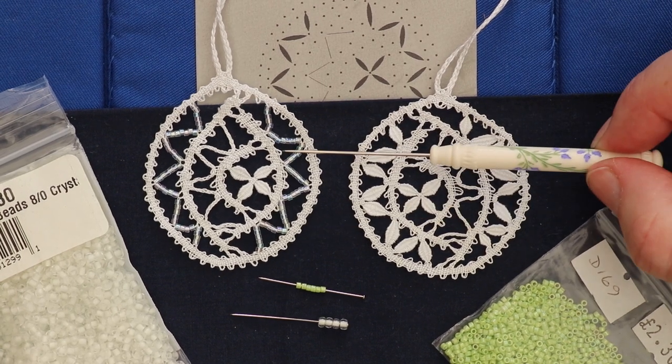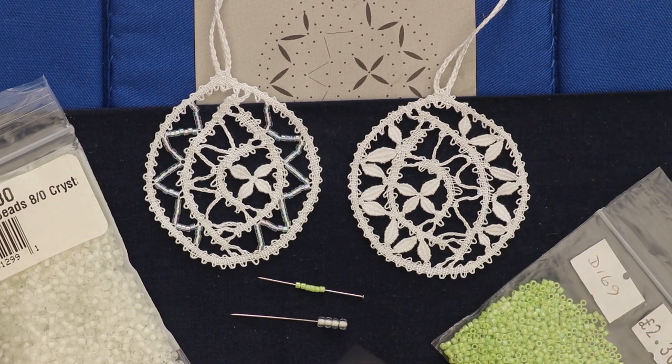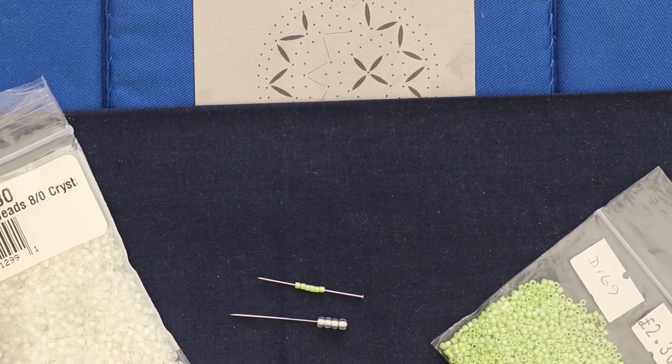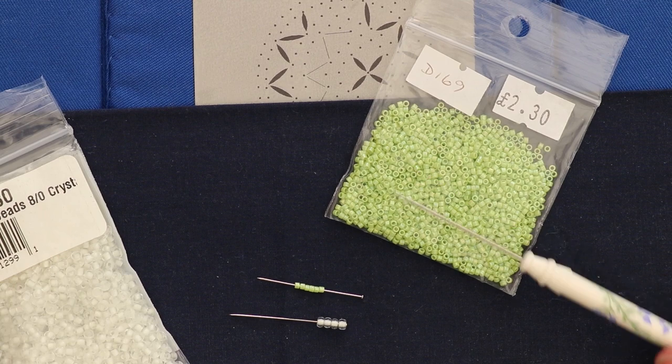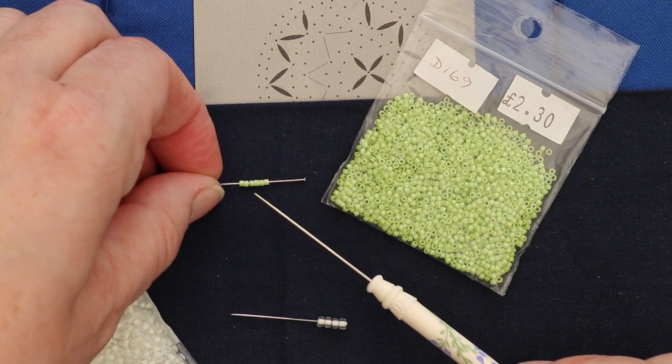Now the beads I used are Delicas, which are these beads here. They're a Japanese bead with very straight square sides as you can see on the pin where I've put some on, but you can also use seed beads.